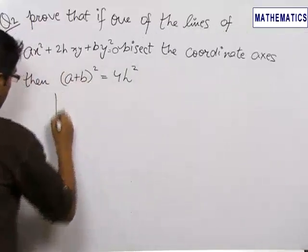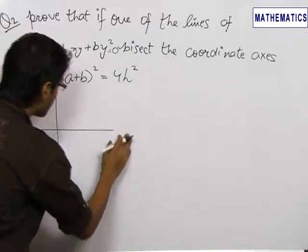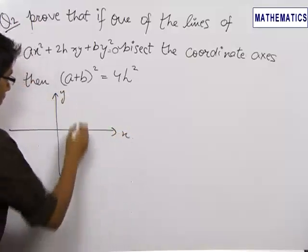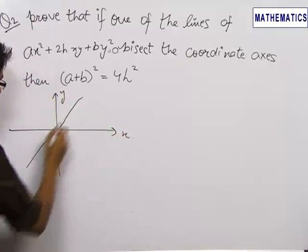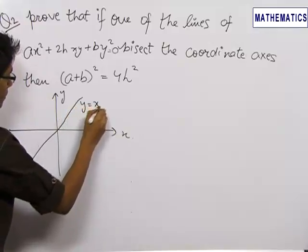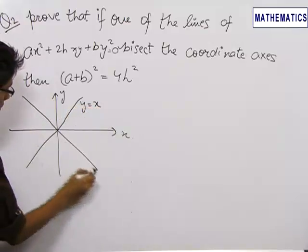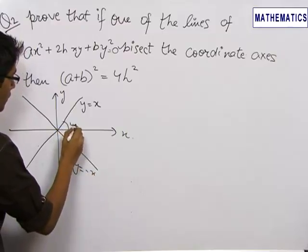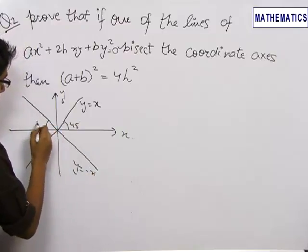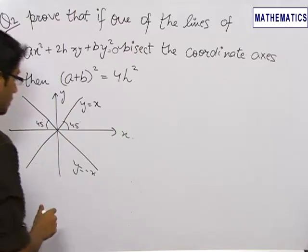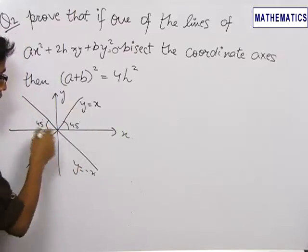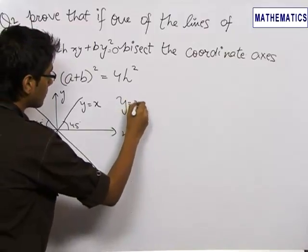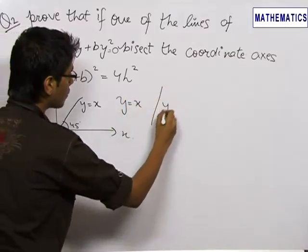Now, we know that the lines which bisect the coordinate axis are either y equals x or y equals minus x, because these are the lines which are at 45 degrees and 135 degrees to the x-axis. So they bisect the coordinate axis. So either the line is y equals x or the line is y equals minus x.